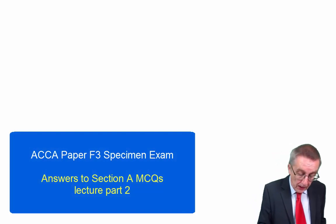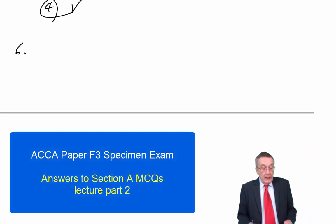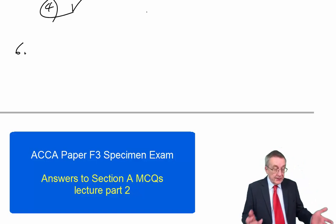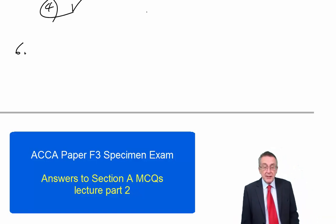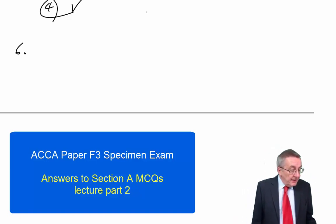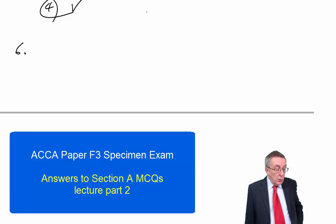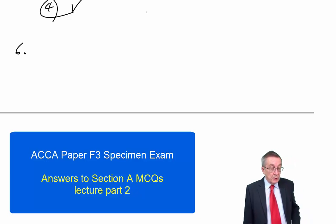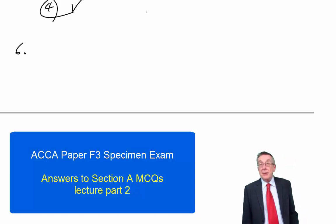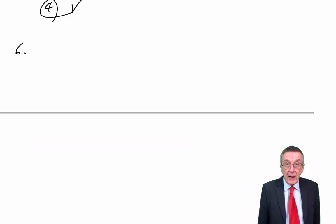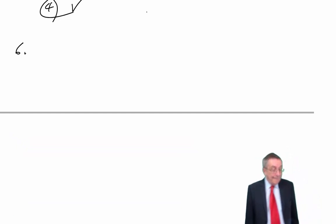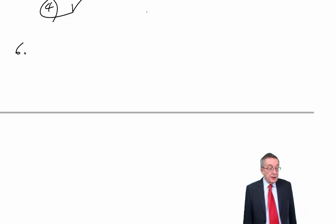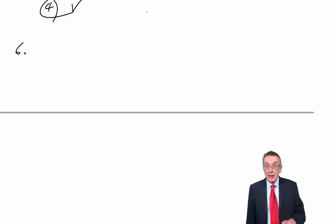Number six. Look at the requirement first — if you don't, you end up wasting time. For these items, what total figures should be included in the company's statement of financial position at 31st December 20X5? You want the totals for current assets and current liabilities.